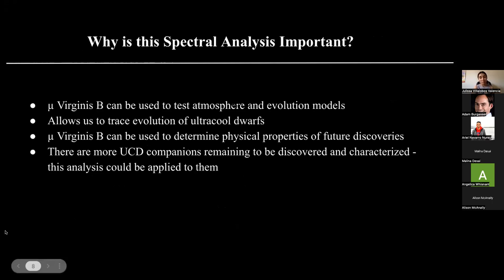This analysis is important because Mu Virginis B can be used to test different atmosphere and evolution models in different lines of research. It also allows us to trace the evolution or the age of ultracool dwarfs with the hydrogen emission line. Mu Virginis B can be used to determine physical properties of future discoveries of ultracool dwarfs. And there are very many more ultracool dwarf companions remaining to be discovered and characterized — we can use this analysis to figure out the classes and characteristics of any other ultracool dwarfs that we may find.